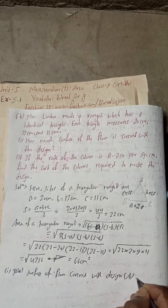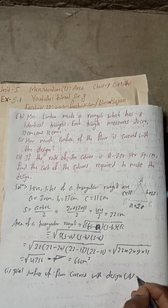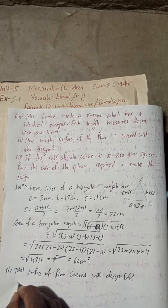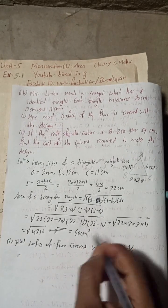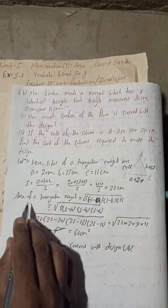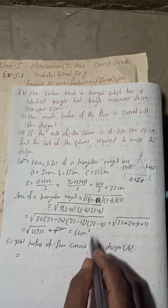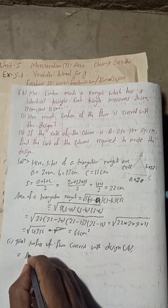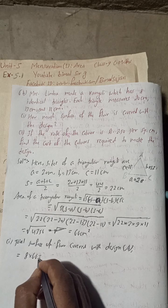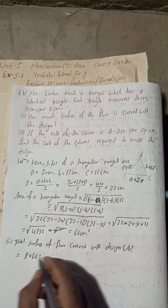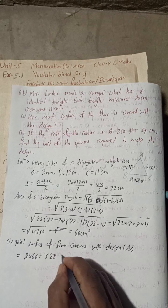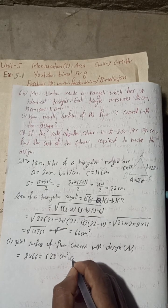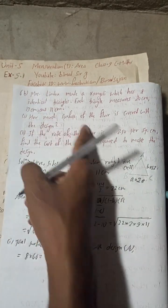The total surface of floor covered with design, A = 8 × 66 = 528 cm². This is the answer for number one.